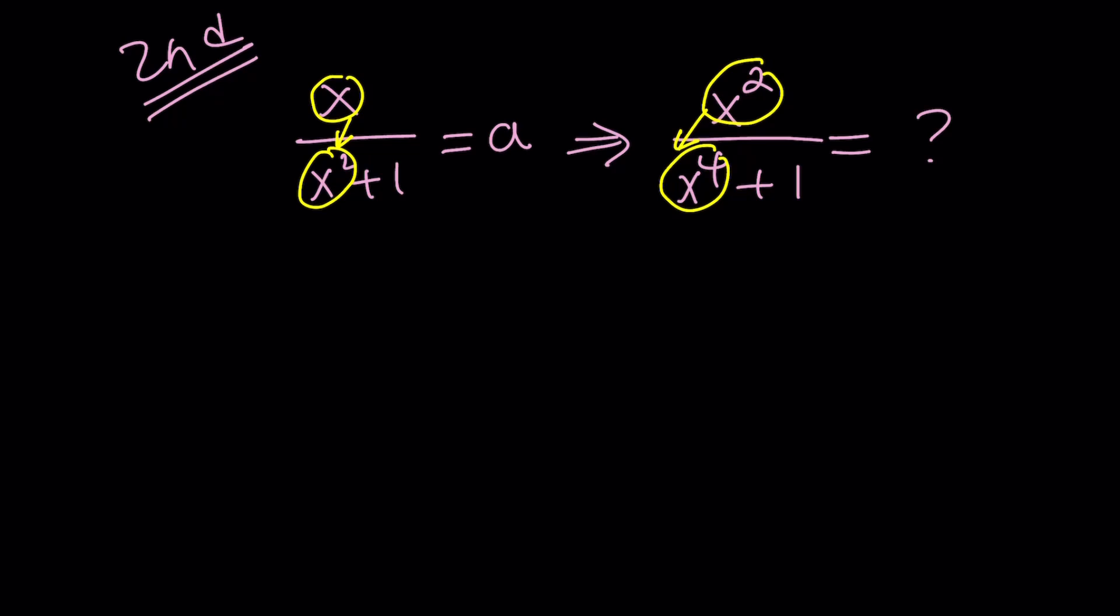And this can be done by flipping. If you flip this expression, in other words, the reciprocal, you're going to get 1 over a. But this expression is actually going to equal to x plus 1 over x because it's separable. You see that? And then you can kind of separate it like this.